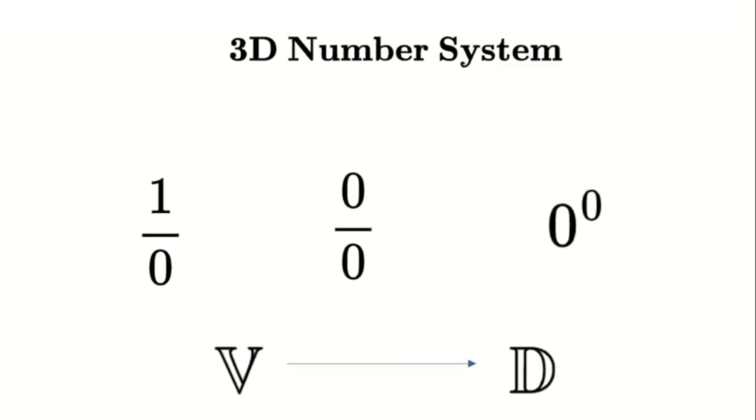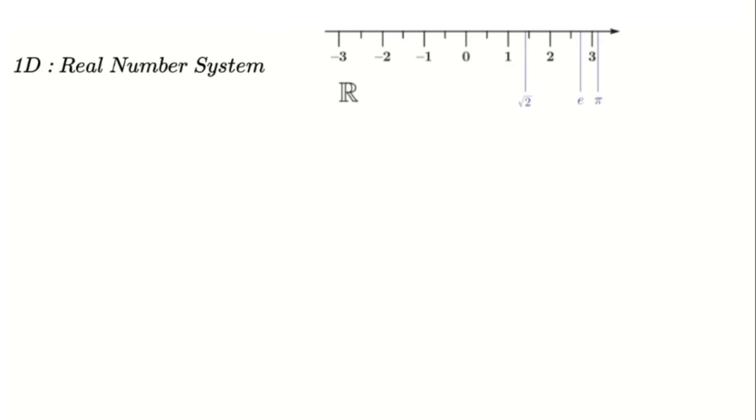Before we jump into building this new system, let's take a quick look at why our traditional systems fall short when faced with singularities. First, we have the 1D number system, or real number system. This is your everyday number line, dealing with all the numbers we typically use. It works great for basic arithmetic, but as soon as we try to divide by zero, it simply breaks down. We get the undefined error.